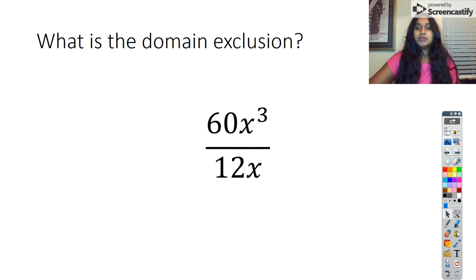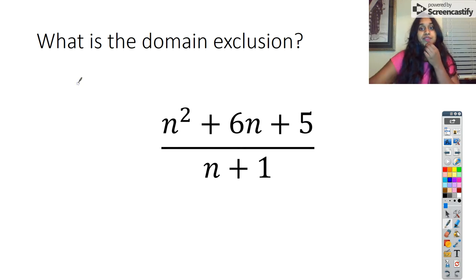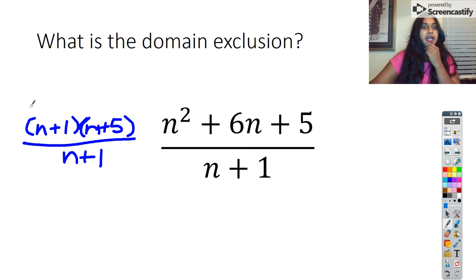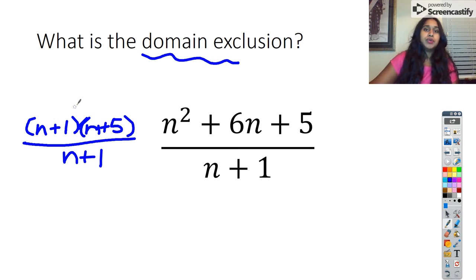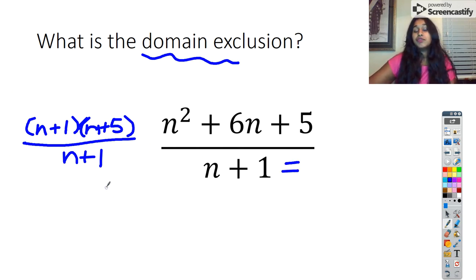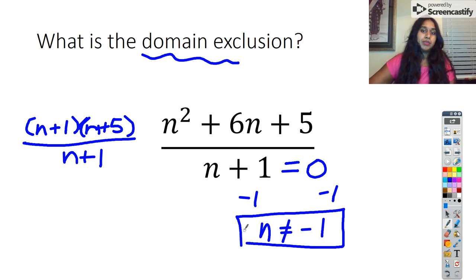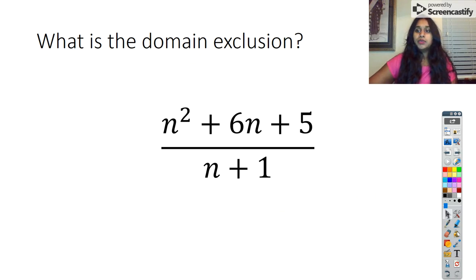Our next question. We begin with the factored form, which is N plus one times N plus five, all over N plus one. This helps us find the domain exclusion and also identify vertical and horizontal asymptotes. So my domain exclusion: all I have to look at is the denominator. We set N plus one equal to zero. If I subtract from both sides, N equals negative one. That's my exclusion — N cannot equal negative one. My domain would be all real numbers except when N equals negative one.